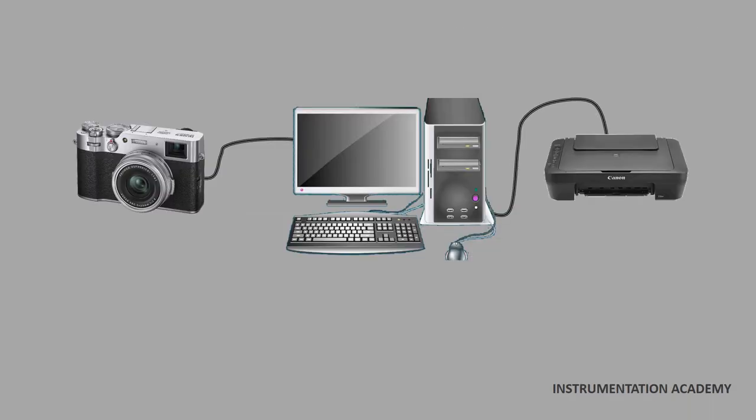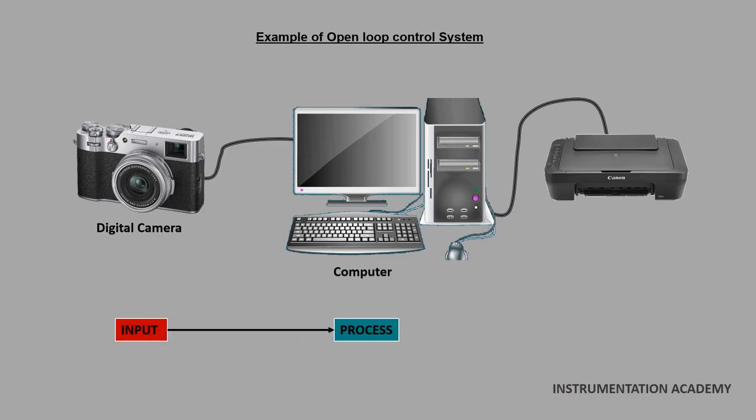Now let's see an example of open loop control system. A digital camera is used to take a photograph which is then transferred to a computer where processing of the picture is done. Now a printer is used to take a printout of this picture. As there is no feedback from output, no action can be taken to improve the quality of the picture.